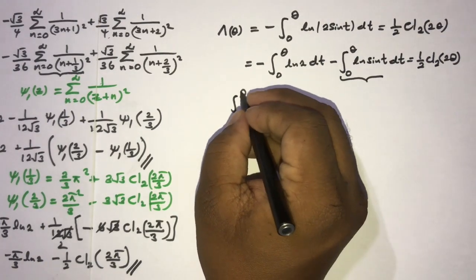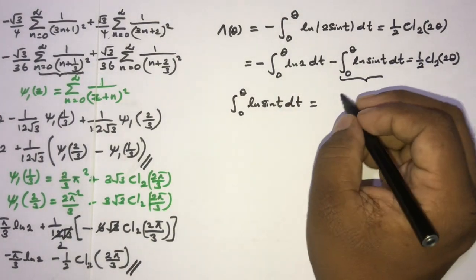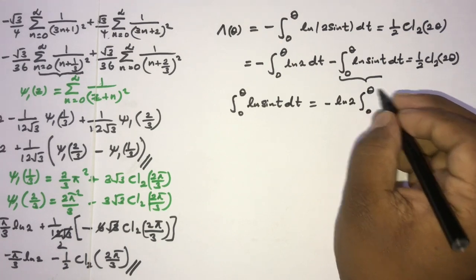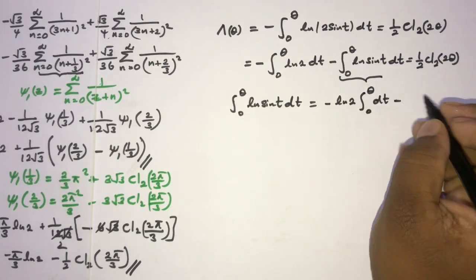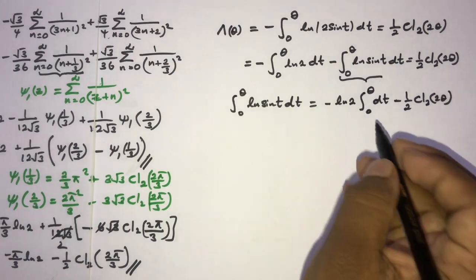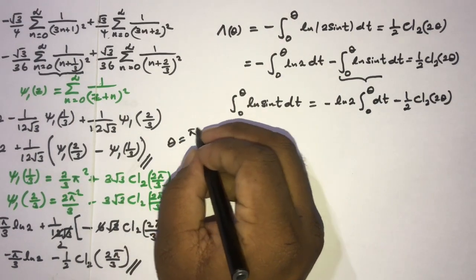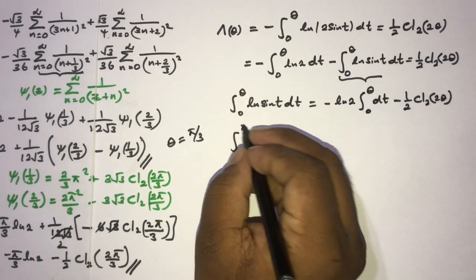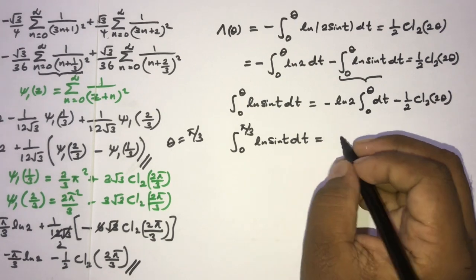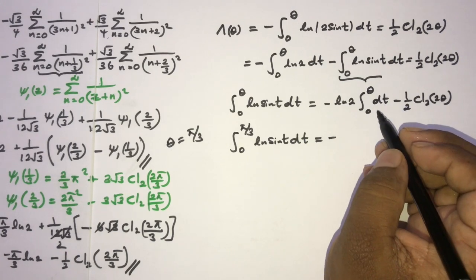Isolating the integral of ln(sin t), we get the integral from 0 to θ of ln(sin t) dt = -ln(2)·θ - (1/2) Cl₂(2θ). Setting θ = π/3, we get the integral from 0 to π/3 of ln(sin t) dt = -(π/3) ln(2) - (1/2) Cl₂(2π/3).